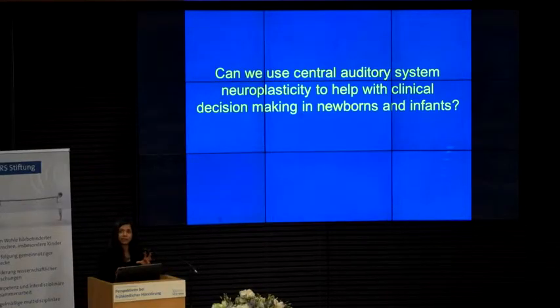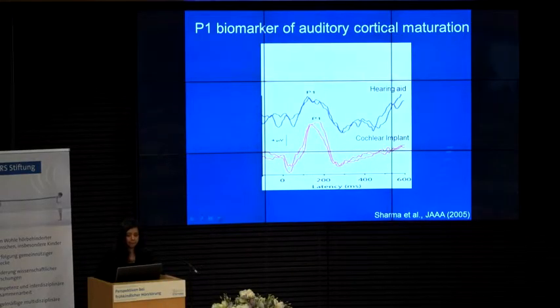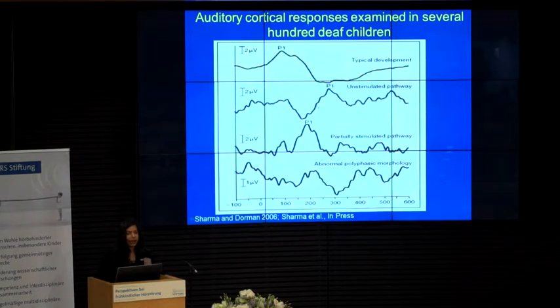That brings us to the clinical relevance. As a clinician, whenever I look at neuroplasticity I ask myself: can I use this in the clinic to help individual children with hearing loss? Can we use these principles of neuroplasticity in individual decision-making? This P1 is very replicable — you can get it with an implant, with a hearing aid — and looking at thousands of children we have described different patterns of responses. A typically developing cortex looks like this; a large negativity indicates an unstimulated cortex that hasn't received auditory stimulation; a partially stimulated cortex looks different; and a reorganized cortex indicates outcomes will not be good.